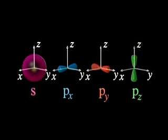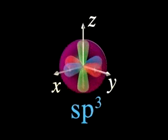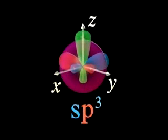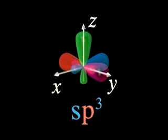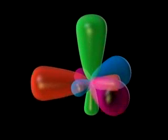Mixing of the S with all three P orbitals results in formation of four equivalent SP3 hybrid orbitals, directed toward the apices of a tetrahedron.